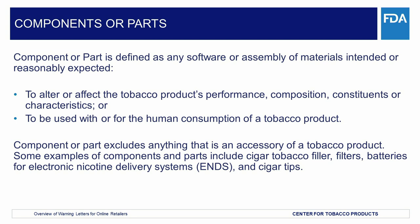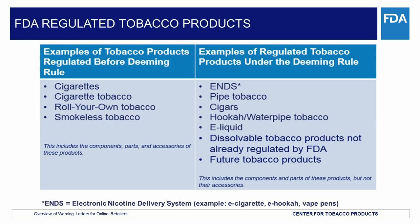Some other examples of accessories of the newly regulated products are pipe pouches, ashtrays, cigar cutters, and carrying cases. Remember that FDA has not extended its regulatory authority to accessories of the newly regulated products at this time. The Tobacco Control Act gave FDA immediate authority to regulate cigarettes, cigarette tobacco, roll-your-own tobacco, and smokeless tobacco. FDA still regulates those products.